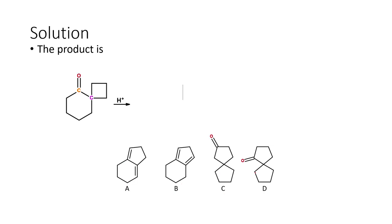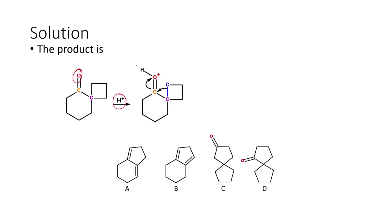Let us look at what are all the different possibilities that may happen. We have an electrophile that is going to be added, and we have an electron-rich oxygen. The first and foremost thing is the electrophile will add to the oxygen — this is how the reaction actually starts. When the bond is formed between oxygen and hydrogen, the oxygen donates its electrons for the formation of the bond, so this gets the positive charge.